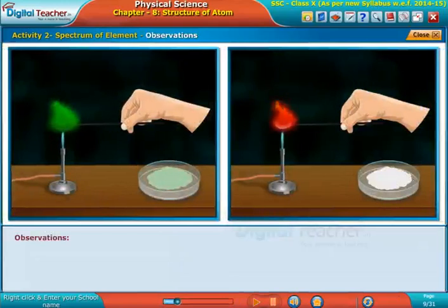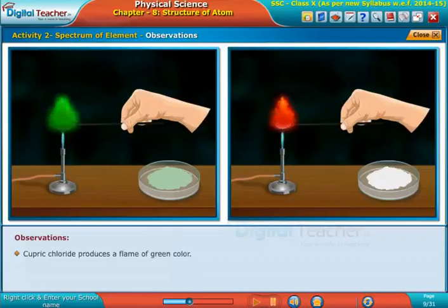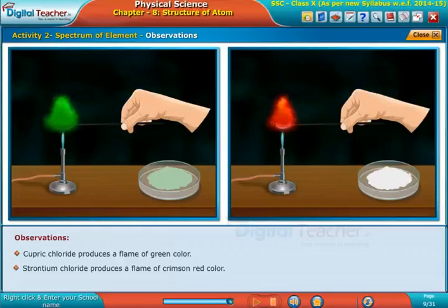In this activity, we observed that cupric chloride produces a flame of green color. Strontium chloride produces a flame of crimson red color.